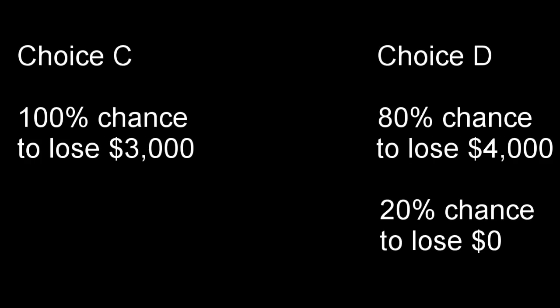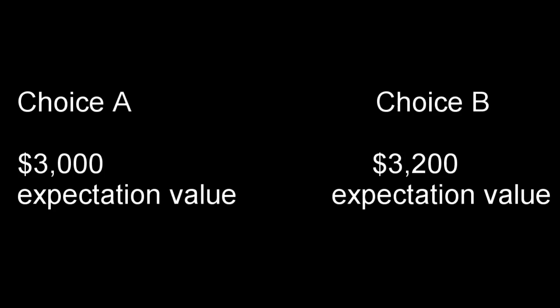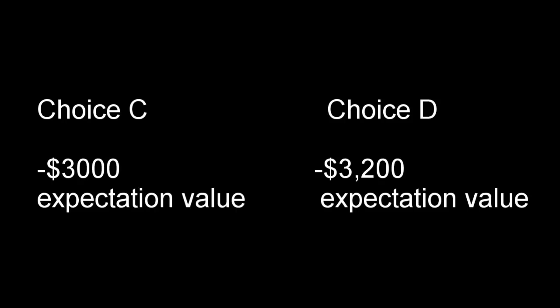But let's switch things up a bit. I will offer you a second choice. This time you can choose choice C, where you will lose $3,000, or choice D, where you can have an 80% chance of losing $4,000 and a 20% chance of losing nothing. For the second choice, 72% of people surveyed said that they would choose choice D. Here's the interesting thing: in both cases, the majority of people actually made the statistically worse choice because of loss aversion. In the first scenario, the expectation value of choice B is $3,200 compared to the guaranteed $3,000 of choice A. In the second scenario, the average amount of money lost on choice D is $3,200 compared to the $3,000 of choice C.